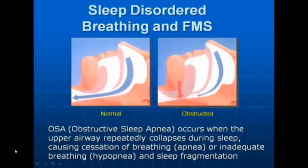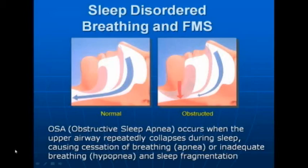I want to talk about sleep disorder breathing and fibromyalgia. Obstructive sleep apnea occurs when the upper airway collapses from the relaxation of muscles — specifically the genioglossus muscle, the tongue, in the back of the throat. When it collapses, air is not able to enter the airway. When air doesn't enter the airway, lungs can't make oxygen, and that's bad because oxygen is a good thing to have. This is a condition we're always on the lookout for because of its very significant physical consequences.